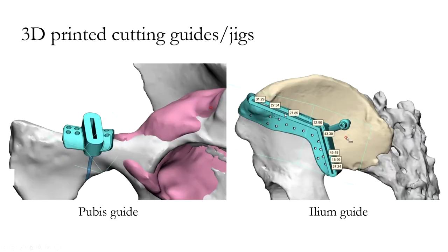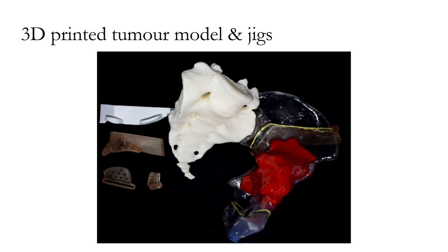To perform these cuts, 3D-printed custom-made patient-specific cutting guides were used. This guide was designed for the pubic cut and this one for the iliac cut. The 3D-printed tumour model and cutting jigs were also prepared. A transparent pelvis model was obtained, as most of the tumour tissue was intraosseous with minimal extraosseous extension. The lines in yellow demonstrate the planned cuts, with the jigs shown on the left-hand side.